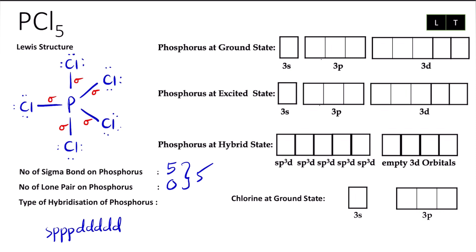Since the total is five, as I mentioned before, we use sp and then d. Because there are five shapes, we are going to use five orbitals: 1s, 3p, then 1d. So the type of hybridization will be sp3d. This is for phosphorus. For the terminal atom, chlorine, it has one sigma bond and three lone pairs.